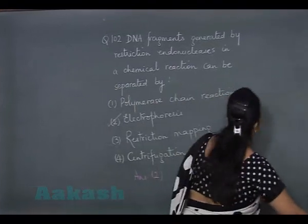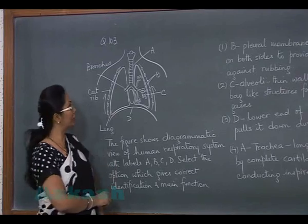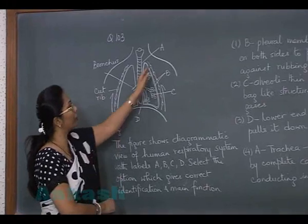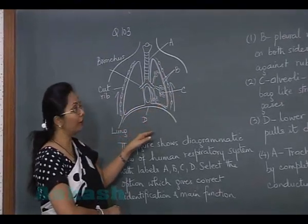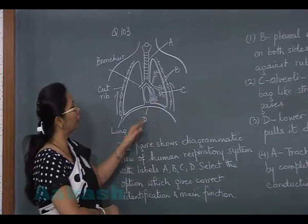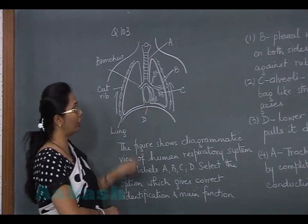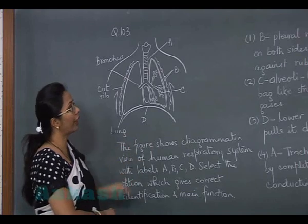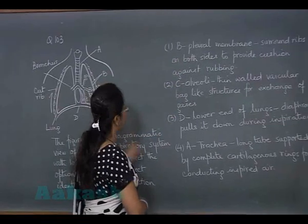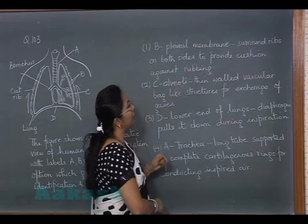Question 103: A diagram of the human respiratory system is given with four labels marked as A, B, C, and D. We have to find the correct labeling along with the main function or characteristic. Option 1 says B is pleural membrane — B is certainly pleural membranes, but the characteristic given — around the ribs on both sides — is incorrect.